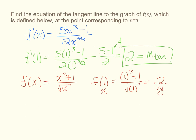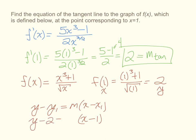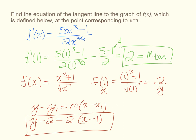Now we have an x value of 1, a y value of 2, and a slope of 2. We can use the point-slope formula: y minus y1 equals m times the quantity x minus x1. Substituting in our values gives y minus 2 equals 2 times the quantity x minus 1. This is one answer for the tangent line. Or, solving for y by distributing and combining like terms, we get the equivalent equation y equals 2x. Either answer is acceptable.